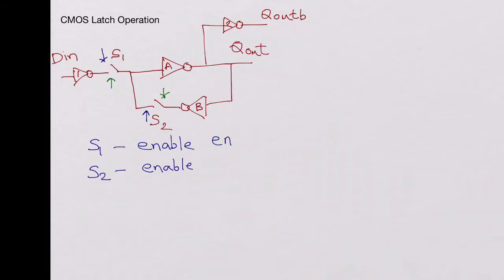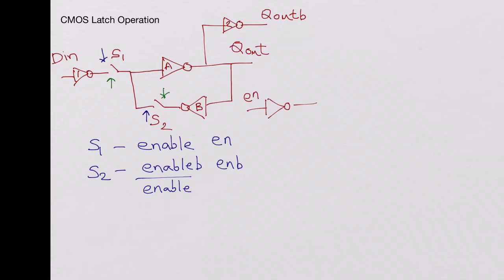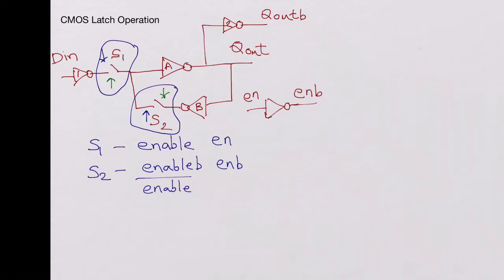S2 is controlled by enable bar, the inverted signal of enable. You add one more inverter, bring in the enable, and generate enable bar. This enable and enable bar control the transmission gates — the pass gates S1 and S2, which are actually CMOS pass gates. Inverter A is strong and inverter B is weak, since inverter B only needs to keep the previous state.